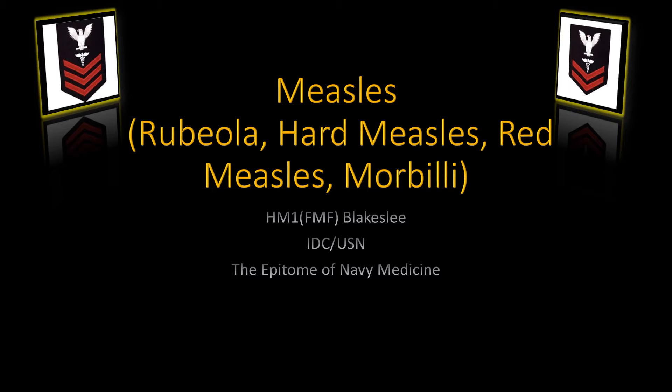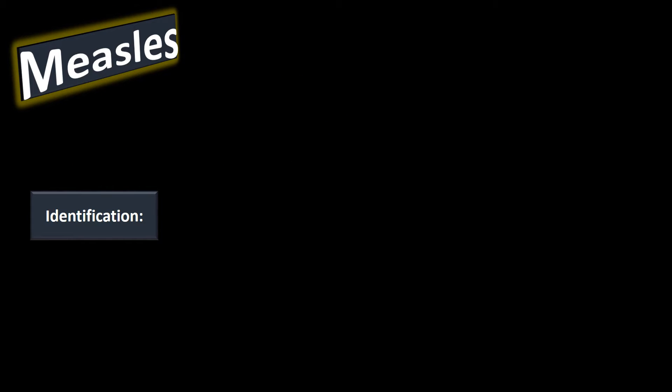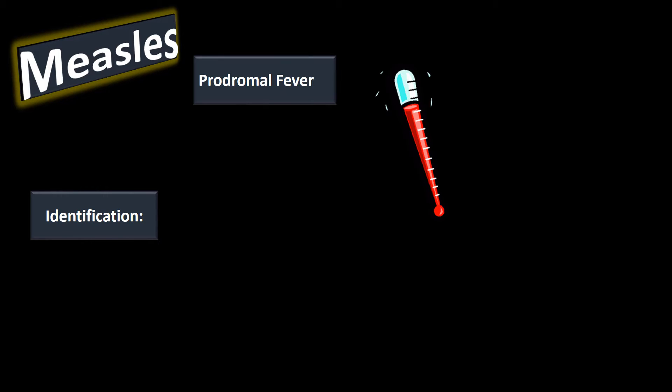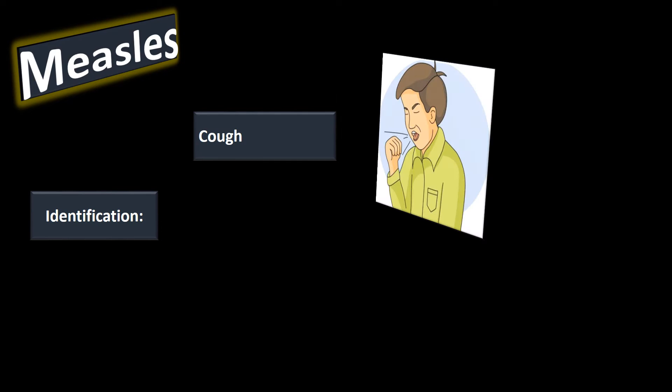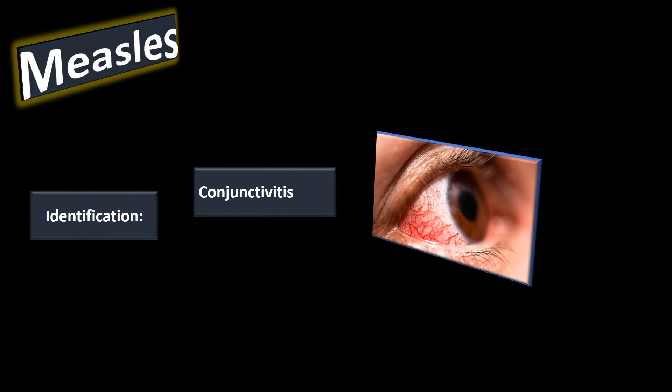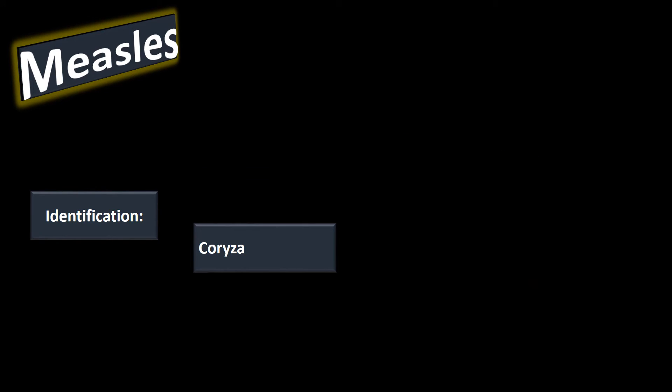When identifying a potential measles patient, measles has a couple of phases. One of those is the prodromal phase — the onset of symptoms that tell us the disease is about to come. We get a prodromal fever and what's called the three C's: cough, conjunctivitis (pink eye), and corizoa.